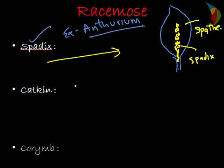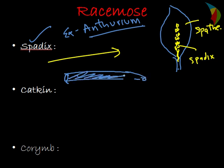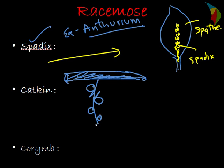Then we have the catkin type. Catkin type is mostly found in mulberry. In the mulberry shoot we have the flower-bearing axis, with older flowers at the base and smaller younger flowers at the tip. This type is mainly found in mulberry.